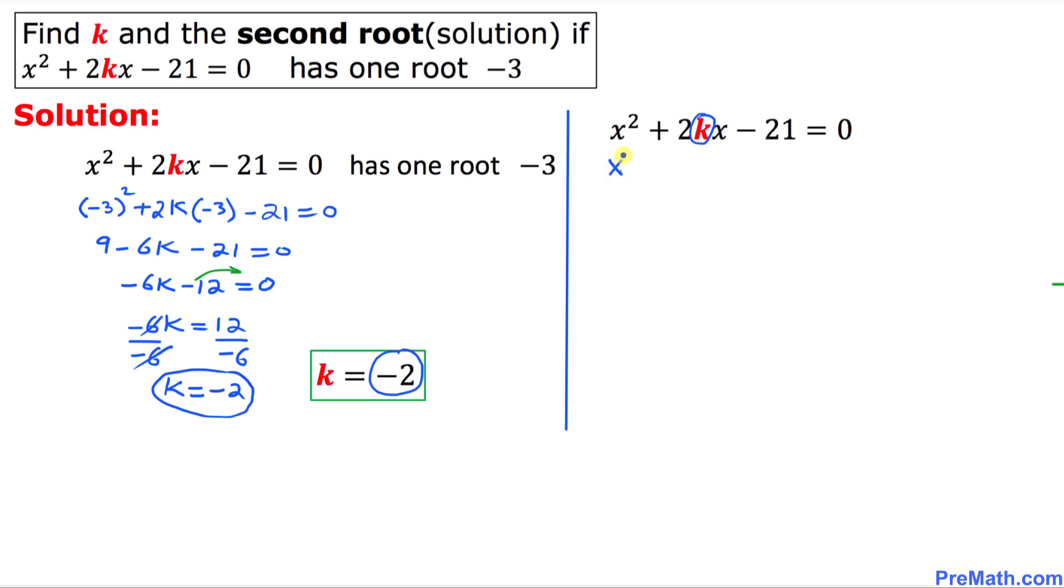So thus we are going to have x square plus 2 times k is negative 2. I'm going to replace that one x minus 21 equal to 0. So that is going to give us x square minus 4x minus 21 equal to 0.